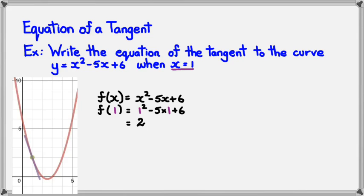And the next thing that I've got to figure out is the gradient or the slope of that tangent. So I'm going to work out f'(x), which the equation is 2x - 5. And now I need to find the gradient when x = 1. So f'(1) = 2(1) - 5, and the gradient is -3.